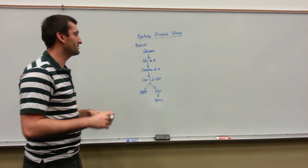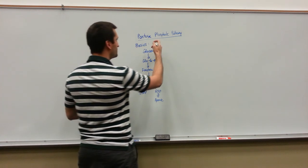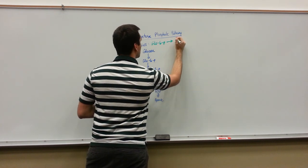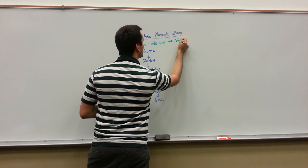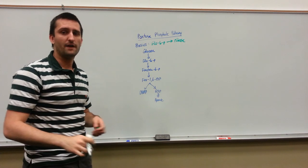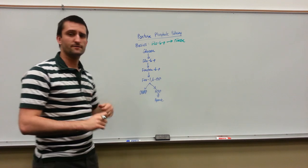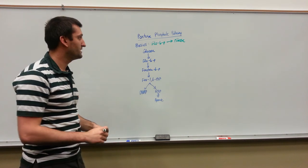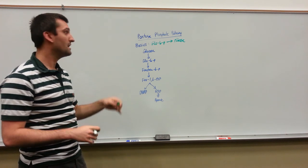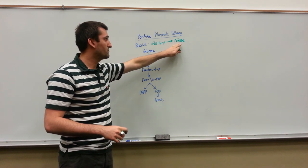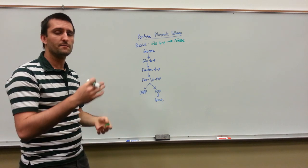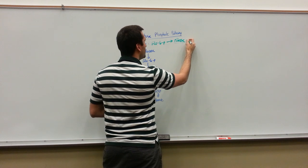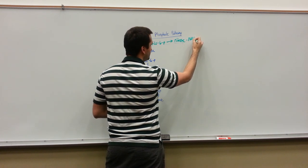The basics of the pentose phosphate pathway: what we're going to do is turn a glucose-6-phosphate into a ribose. A ribose is going to be a 5-carbon sugar, and that ribose is going to be used for nucleotide synthesis. We're going to take a base, a phosphate, and add a ribose 5-carbon sugar — that'll be our DNA backbone. So we can make a ribose sugar out of this, and we can also make NADPH.